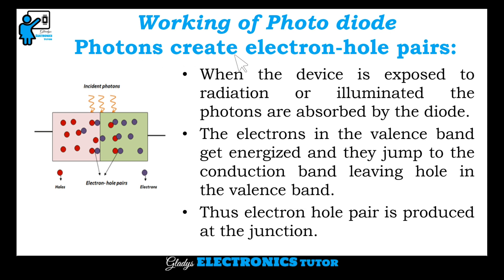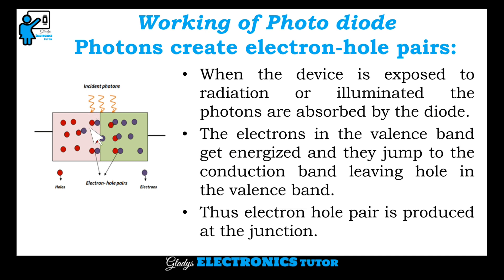First, photons create electron hole pairs. When the device is exposed to radiation or illuminated, the photons are absorbed by the diode. The electrons in the valence band get energized and they jump to the conduction band, leaving a hole in the valence band. Thus, electron hole pairs are produced at the junction.